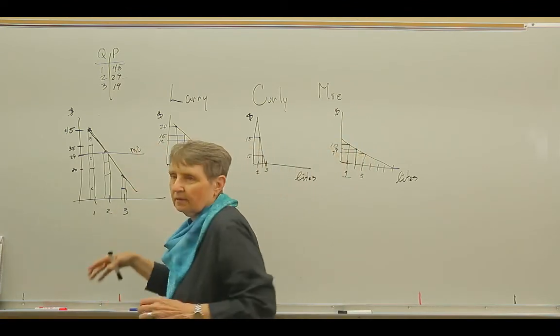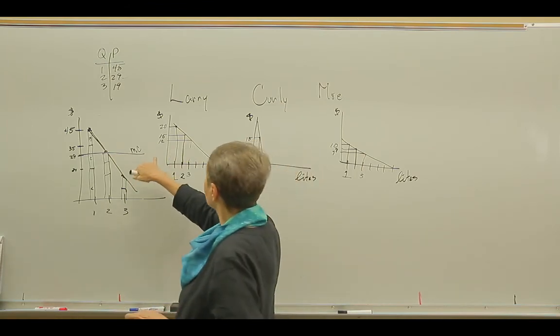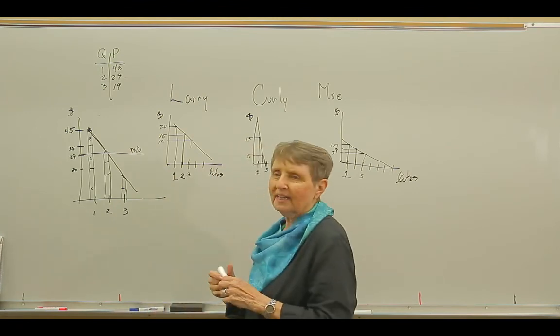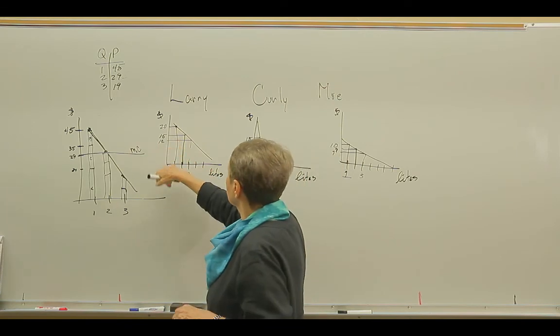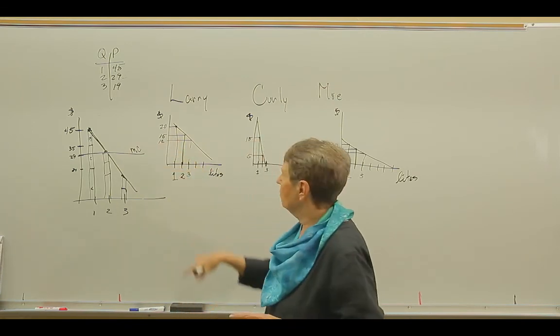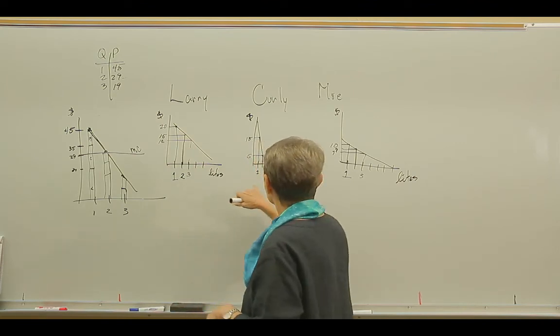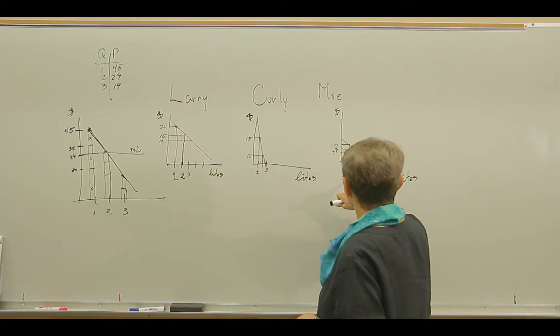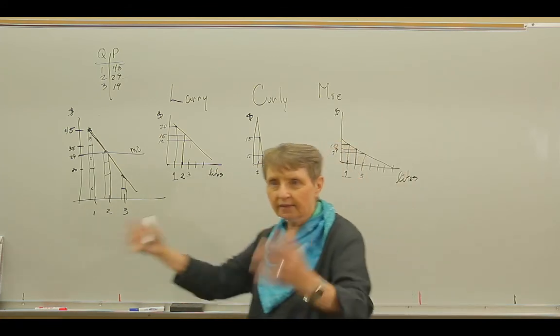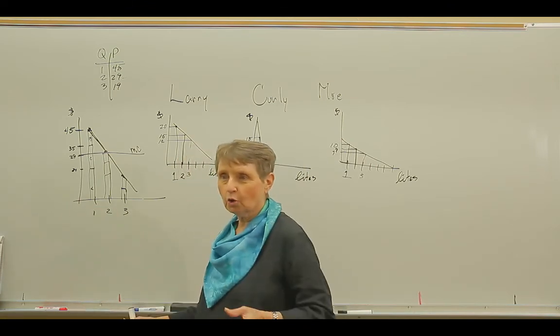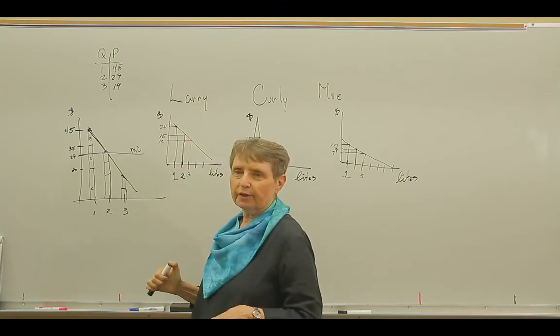So another way, that would be called equivalent payment. Another way we could do it is called Lindahl pricing. Pricing is according to value. So we know that Larry has the biggest value. And so we would make him pay $15 per light. We'd make Curly pay $5 per light. And we'd make Moe pay $9 per light. And that way we would have our $58. But the problem with that method is, you have to assume these people have revealed their true preferences.